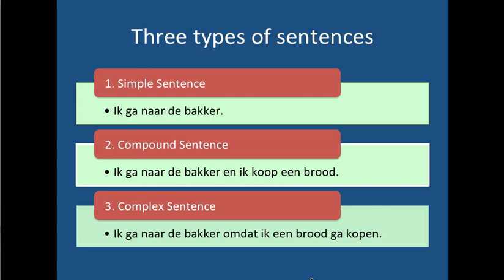I will deal with three types of sentences. First, the simple sentence: 'Ik ga naar de bakker.' Then the compound sentence: 'Ik ga naar de bakker en ik koop een broek.' And then finally, the complex sentence — it consists of a main clause and a subclause, but I'll get to that later: 'Ik ga naar de bakker omdat ik een brood ga.' I'll deal with three sentences in this particular order.